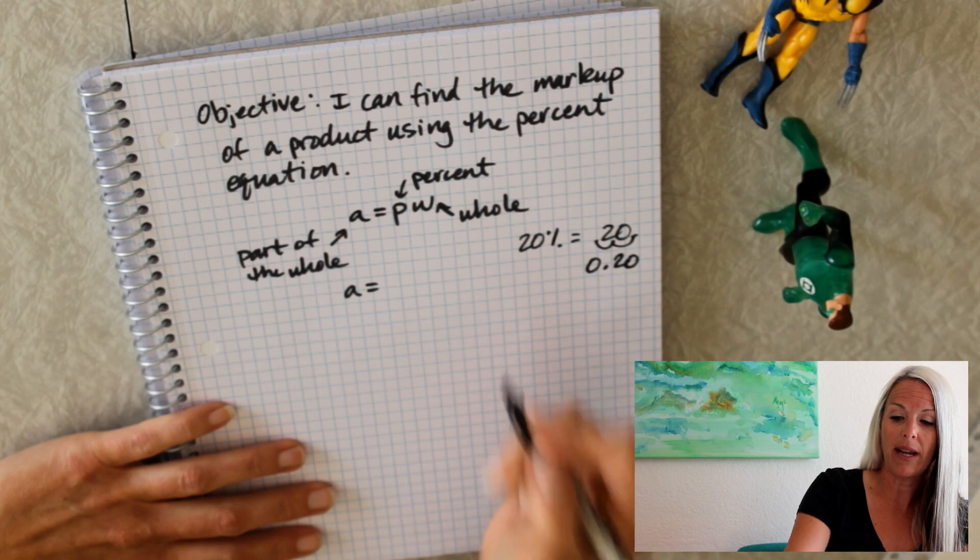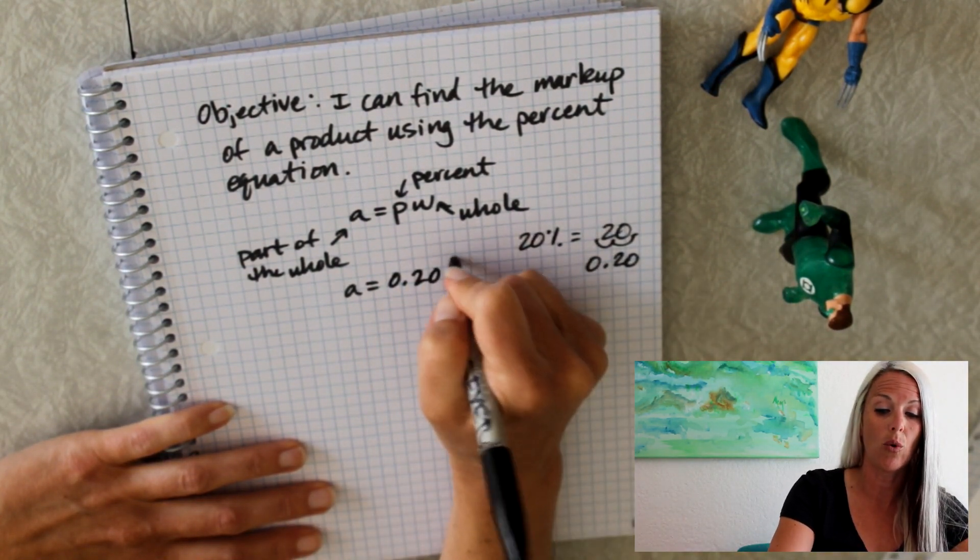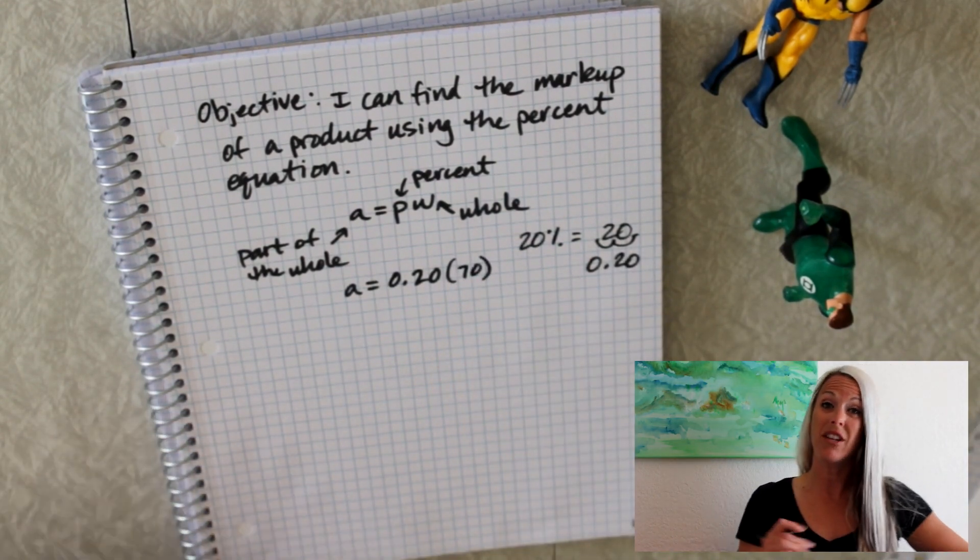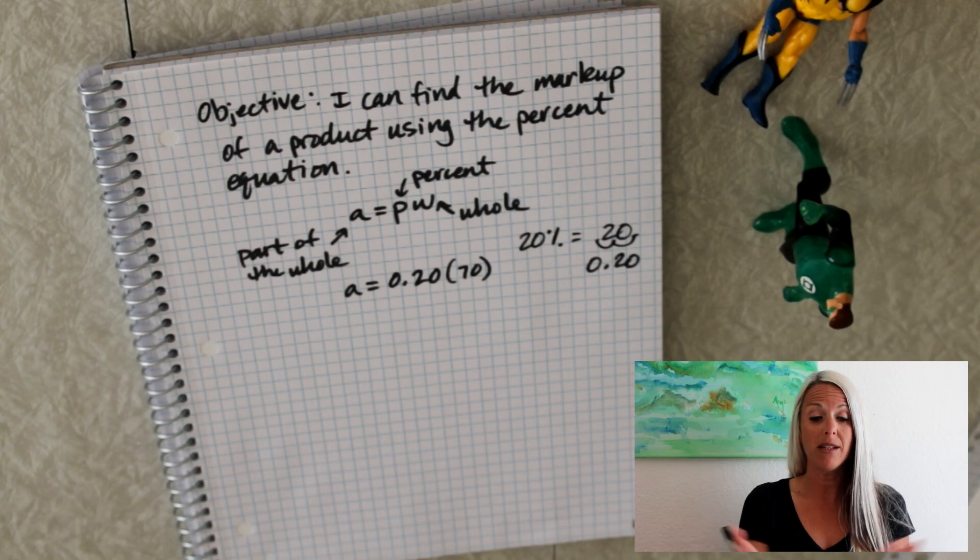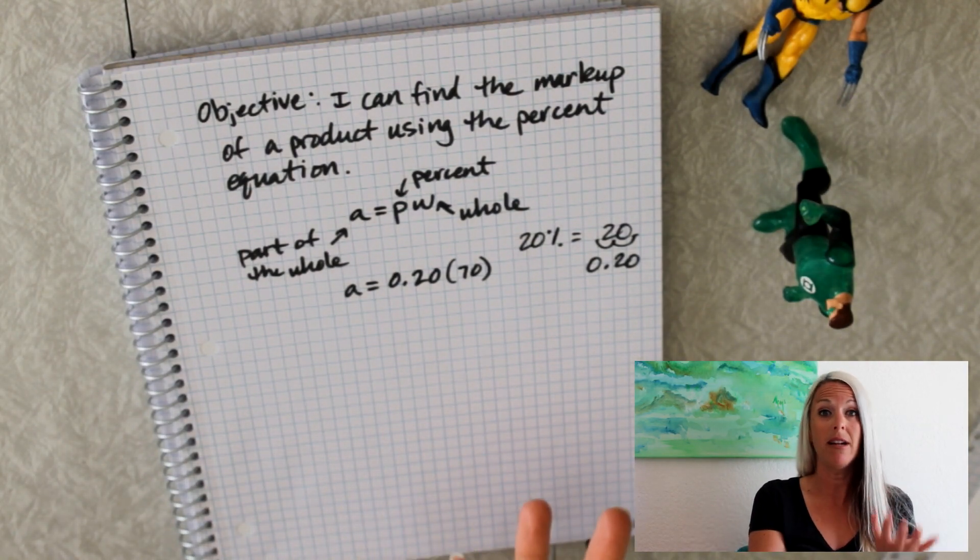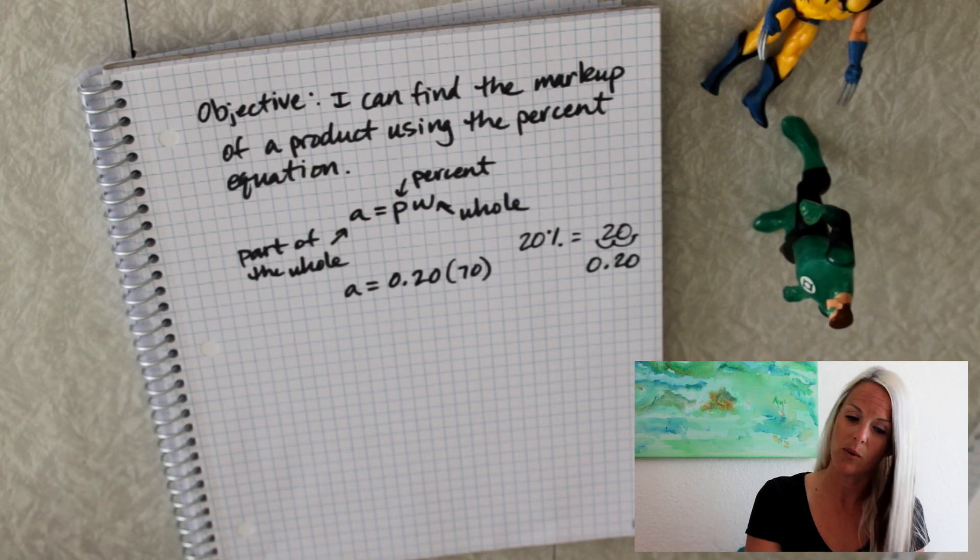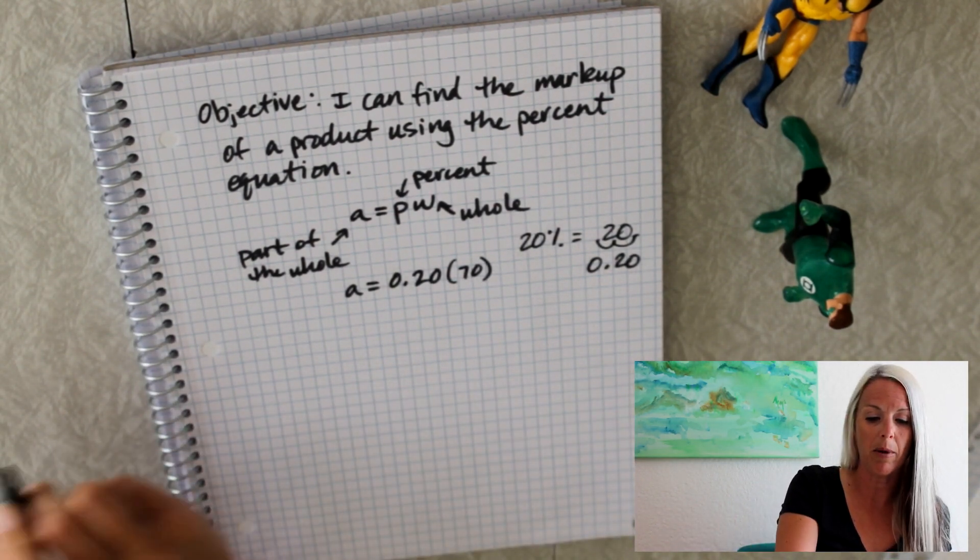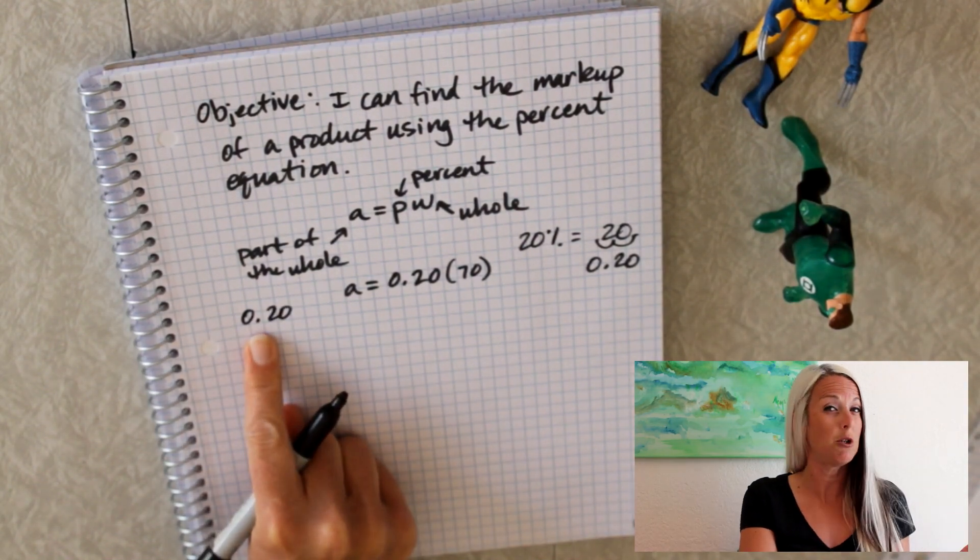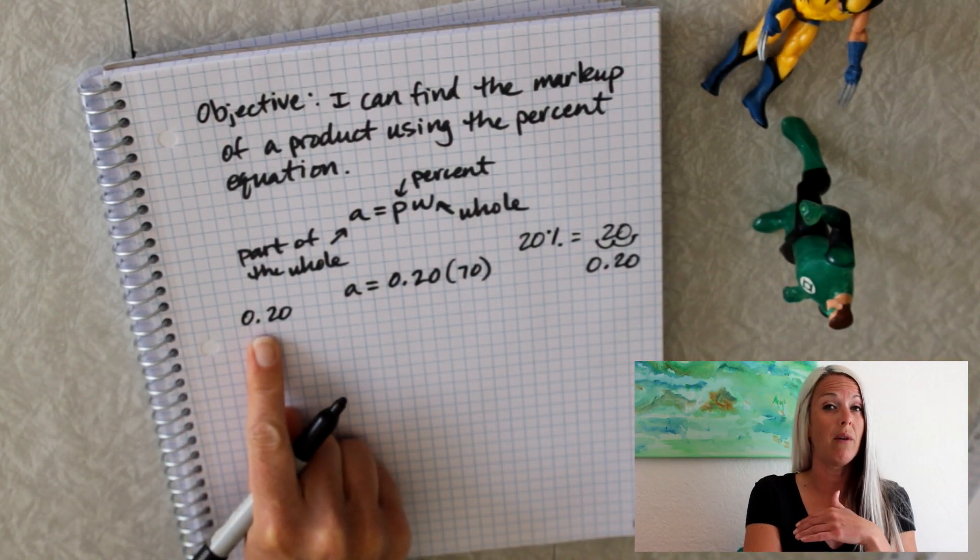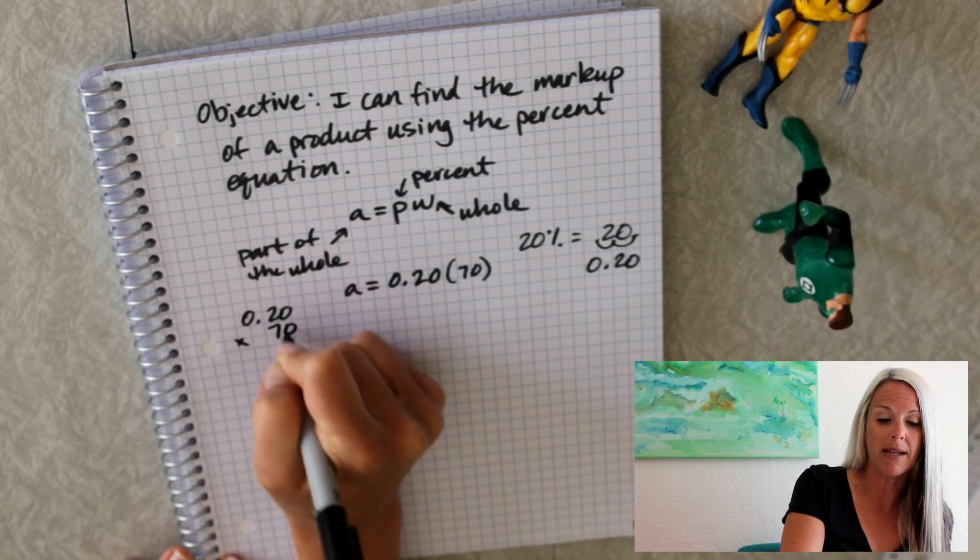So right now we've got 20% of our whole 70. So remembering of in math means to multiply. So we're going to go ahead and multiply 70 and 0.2 or two tenths or 20 hundredths. So we can do that on the side of our paper right here. And I like to line it up where the number with the most digits is on the top because we don't have to line up our decimals when we multiply.